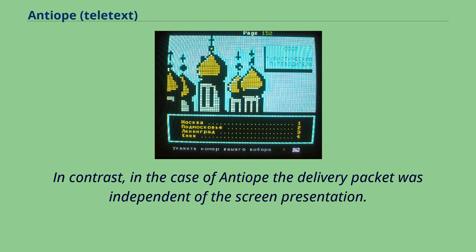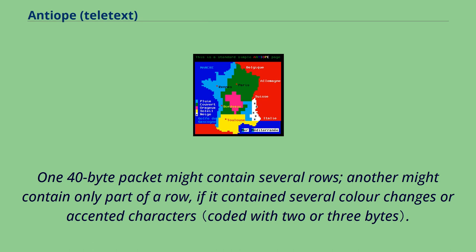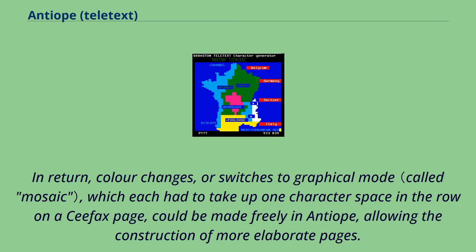In contrast, in the case of Antiope the delivery packet was independent of the screen presentation. One 40-byte packet might contain several rows; another might contain only part of a row, if it contained several color changes or accented characters. In return, color changes or switches to graphical mode — which each had to take up one character space in the row on a CFAX page — could be made freely in Antiope, allowing the construction of more elaborate pages.